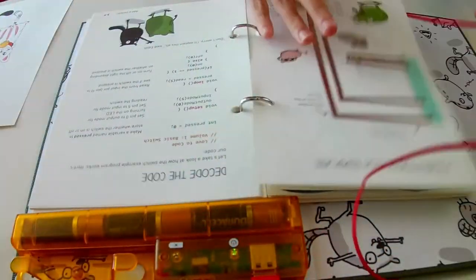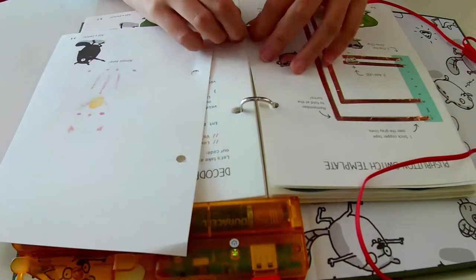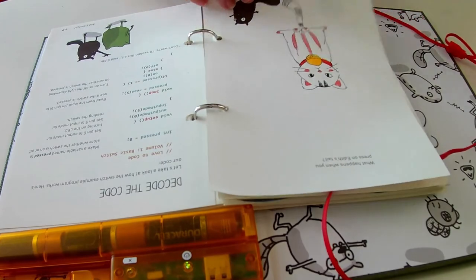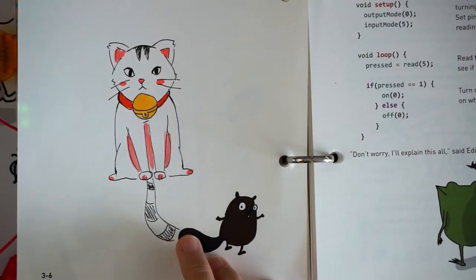Let's put the page back into the Chibi book and check out the result. Edith's tail makes the cat's bell light up!